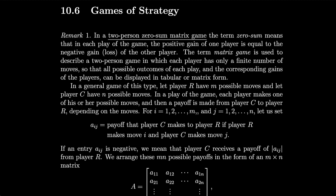Section 10.6, Games of Strategy. In a two-person zero-sum matrix game, the term zero-sum means that in each play of the game, the positive gain of one player is equal to the negative gain or loss of the other player. The term matrix game describes a two-person game in which each player has only a finite number of moves, so that all possible outcomes and the corresponding gains can be displayed in tabular or matrix form.